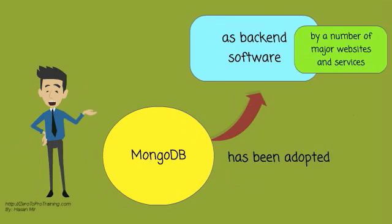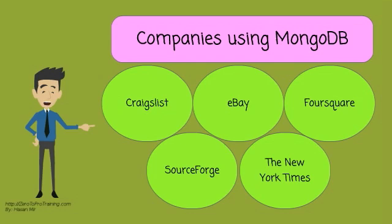Since then, MongoDB has been adopted as back-end software by a number of major websites and services, including Craigslist, eBay, Foursquare, SourceForge, and the New York Times, among others.